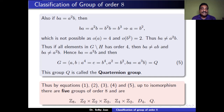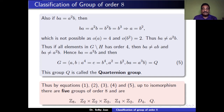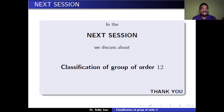Thus, we have seen that there are exactly 5 isomorphism classes of groups of order 8: Z8, Z2 × Z2 × Z2, Z4 × Z2, D4, and Q. The first three — Z8, Z2 × Z2 × Z2, and Z4 × Z2 — are abelian, while D4 and Q are non-abelian groups. In the next session, we will discuss the classification of groups of order 12. Thank you.